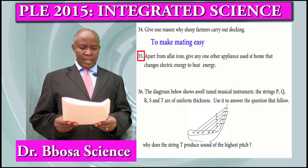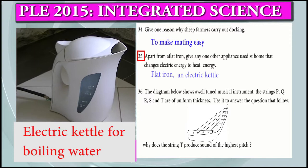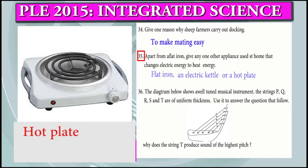Question 35: Apart from a flat iron, give one other appliance used at home that changes electric energy to heat. It could be an electric kettle or a hot plate.